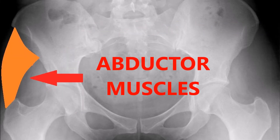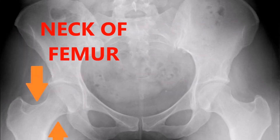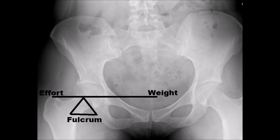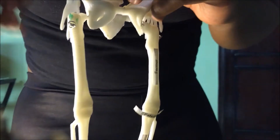The structures of the abductor mechanism include the hip joint, the abductor muscles, the neck of femur, and body weight. The hip joint acts as a fulcrum, the effort is provided by the abductor muscles, and the load is the body weight.